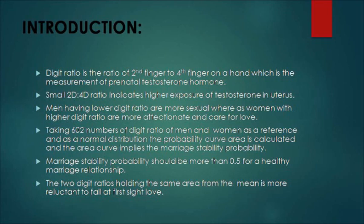Digit ratio is the ratio of the second finger to the fourth finger on a hand, which is a measure of prenatal testosterone hormone exposure. A smaller digit ratio indicates higher testosterone exposure in utero. Men having a lower digit ratio are more sexual, whereas women with a higher digit ratio are more affectionate and care for love.